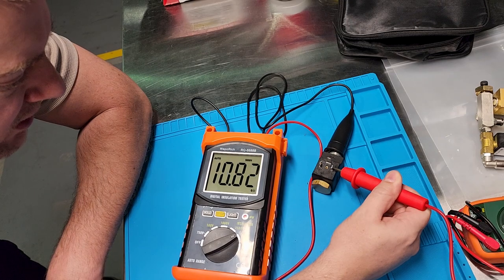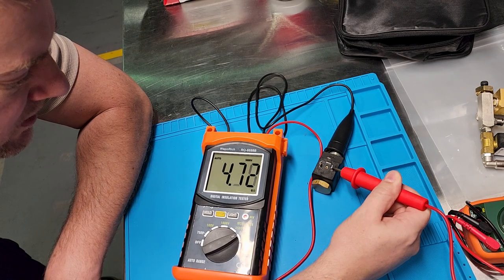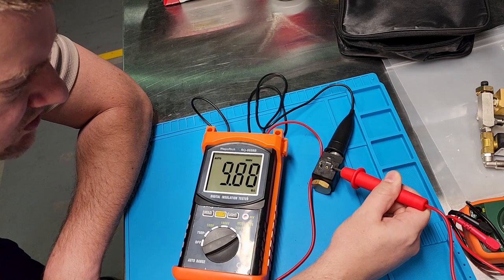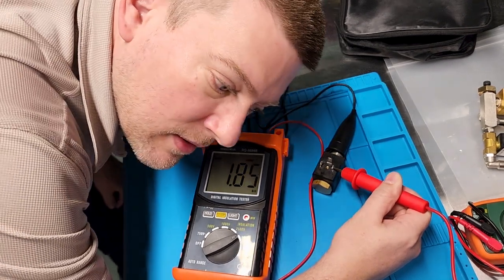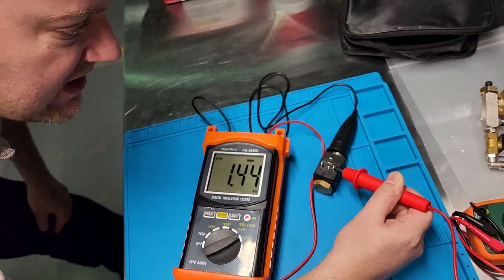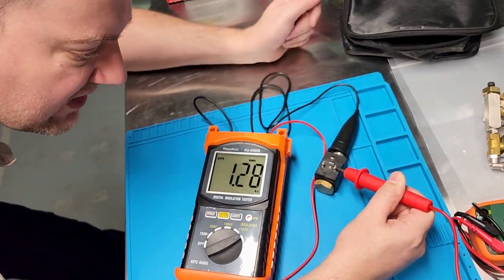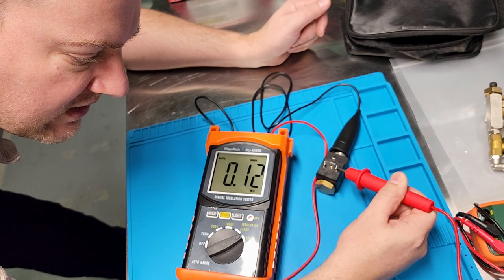Now one of the things you should be aware of is see how the numbers are jumping around? It jumps around every time there's an internal arc, and I can hear it arcing internally. You can actually hear it.